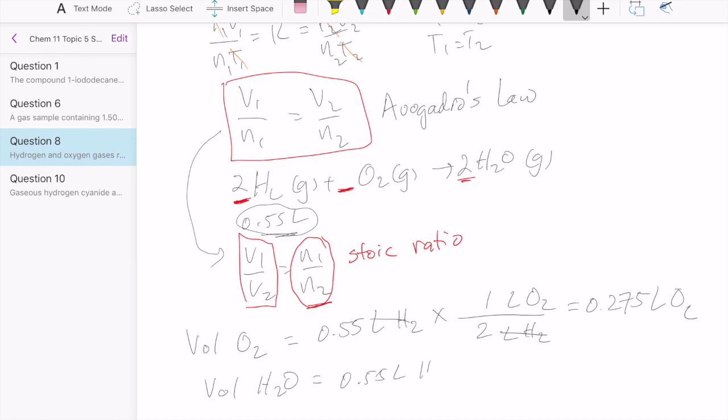If I want to calculate my water, I'll do the same thing. Take H2, multiply by volume of H2 to volume of H2O. This happens to be a two to two relationship, so I end up getting 0.55 liter H2O.